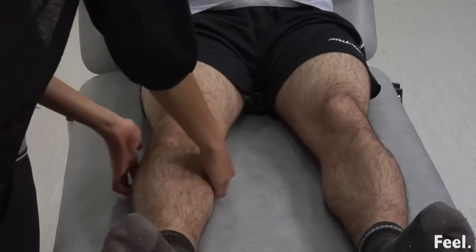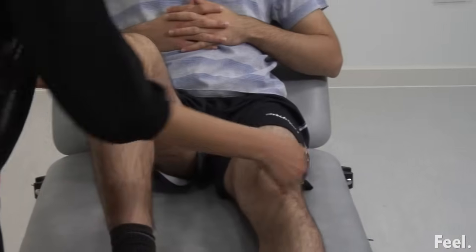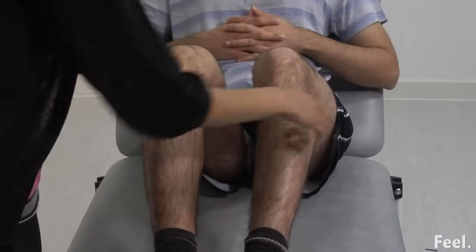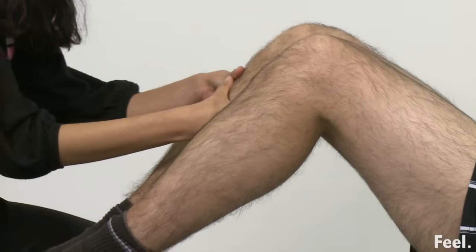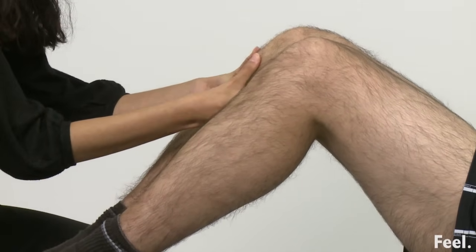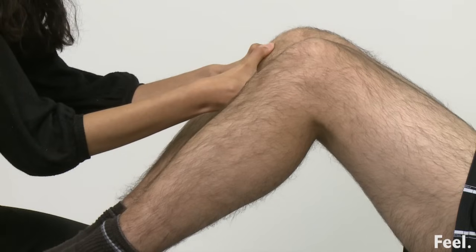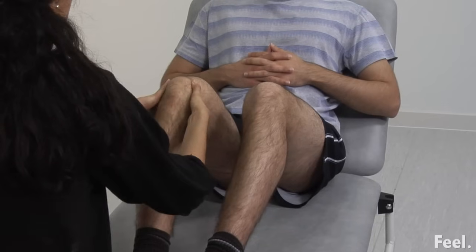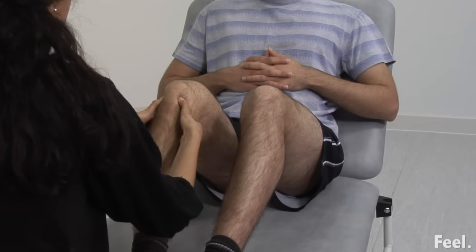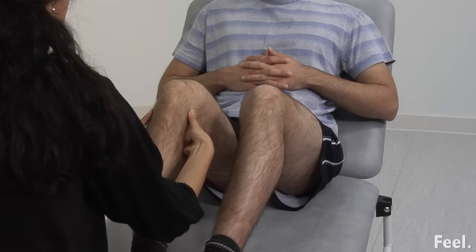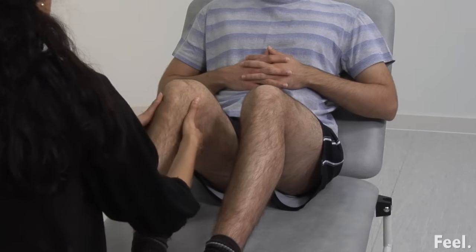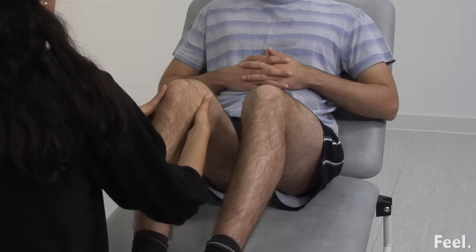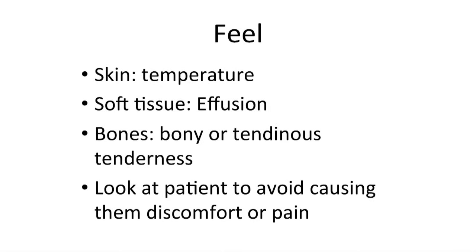To feel the bony margins of the joint, flex the knees to 90 degrees and ensure the patient is comfortable throughout. Start off at the tibial crest, move onto the tibial tuberosity and the patella tendon. Feel the patella margin and the quadriceps insertion before moving onto the collateral ligaments and joint capsule. Tenderness may be localized to tendon origins or insertions. Remember to palpate behind the knee for any aneurysms or cysts, and keep looking at the patient's face to ensure they are comfortable. Compare your findings with the other knee.